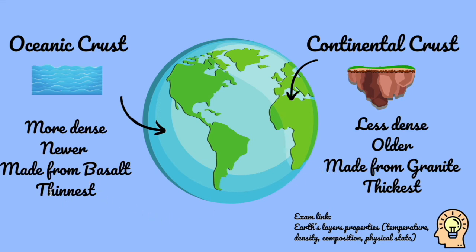Finally, oceanic crust is much thinner compared to continental crust. This is because it's newer — it hasn't taken as many years to build up and create this rock. So hopefully this has helped you distinguish between oceanic and continental crust. As mentioned, you don't specifically need to know about these in your exam, but you need to be able to talk about them when discussing your different types of plate boundaries, in particular the convergent plates.